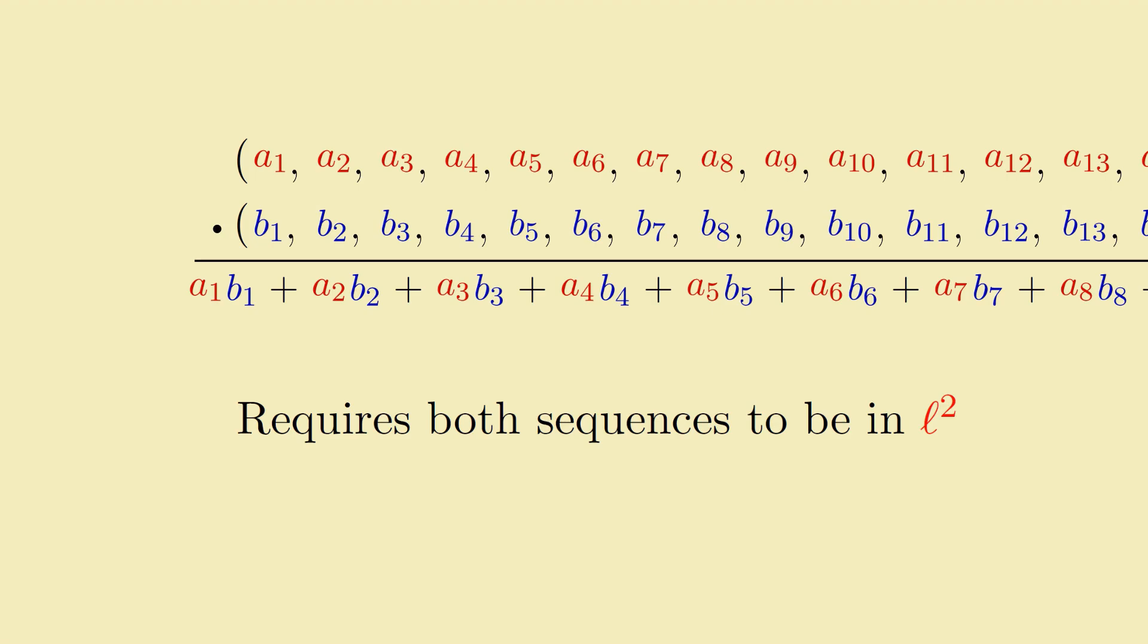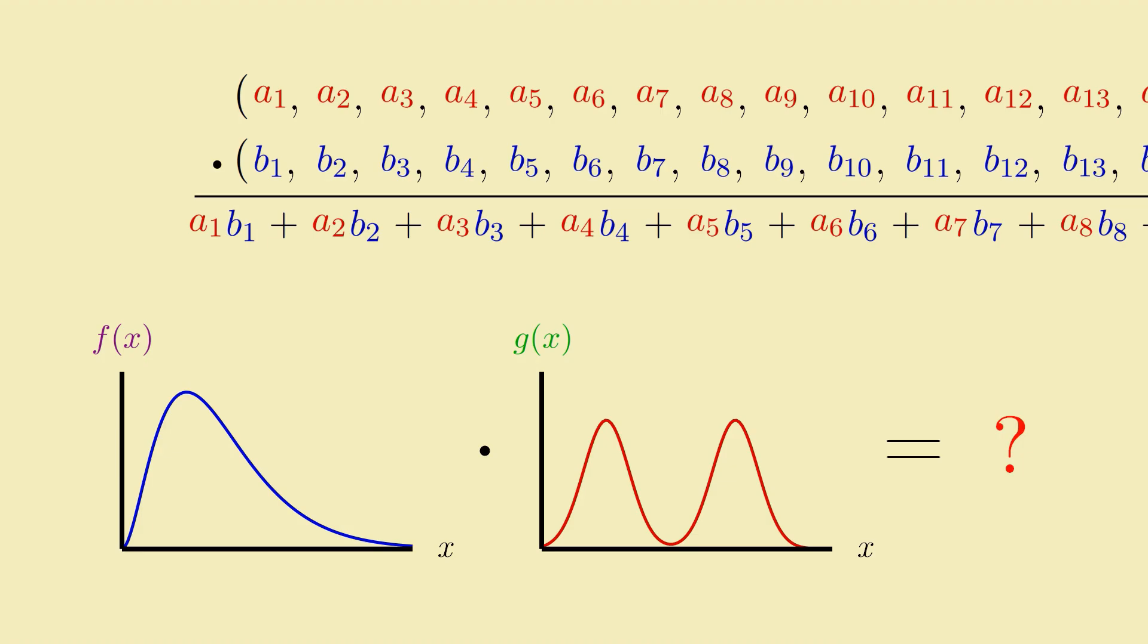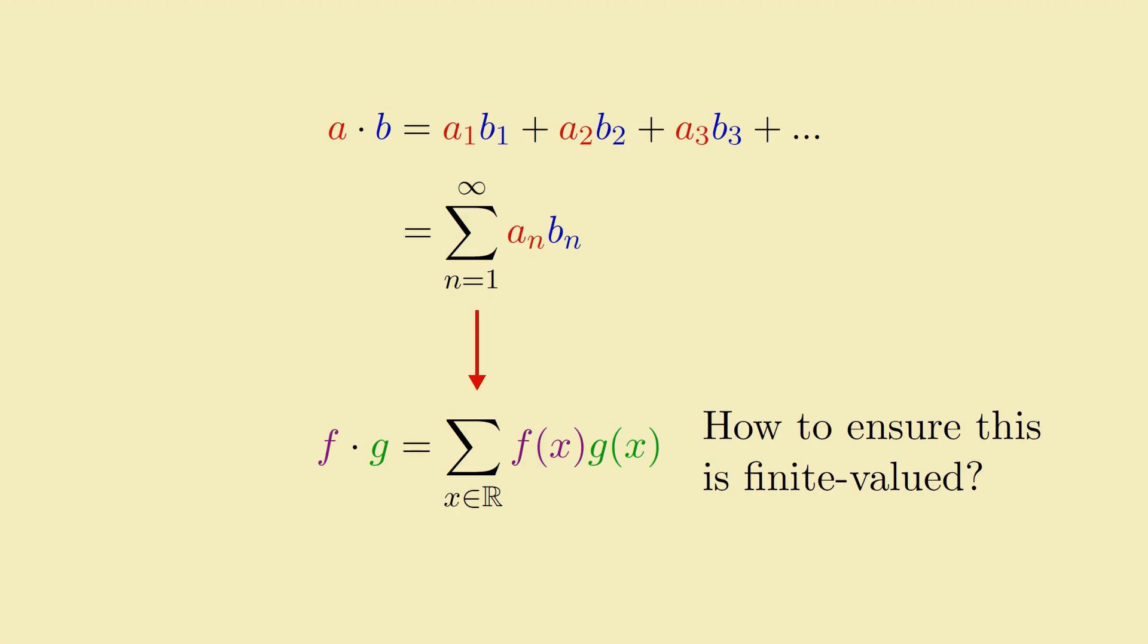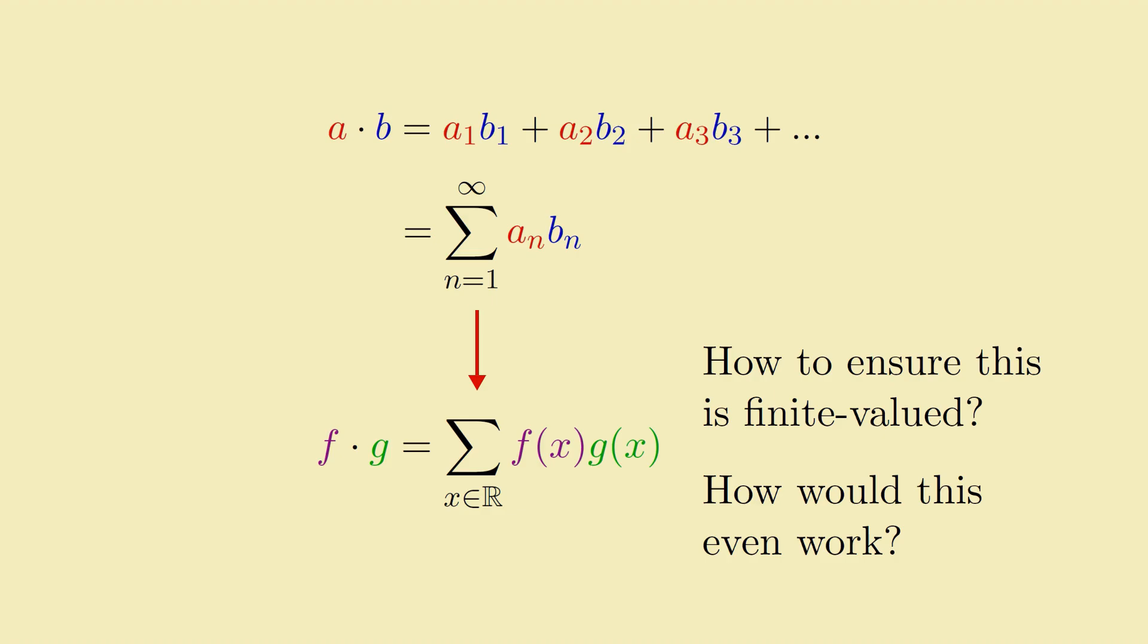So maybe using the same idea, we can extend this dot product on sequences, which only contain countably many components, to real-valued functions, which have uncountably many components, turning a sum of countably many terms into a kind of sum with uncountably many terms, just possibly with some sort of additional restriction to make sure the sum behaves nicely. Well, what do you think? What will happen if we move from a countably infinite sum to an uncountable sum? Will things work out mostly the same as before? What additional constraints need to be in place to ensure an uncountable sum converges? And how exactly do you even add up uncountably many terms anyway? Is that even possible?